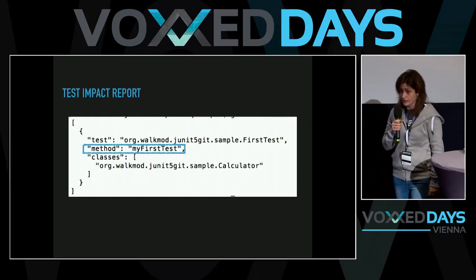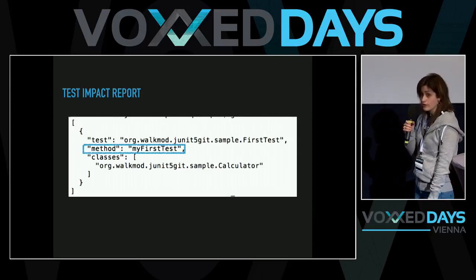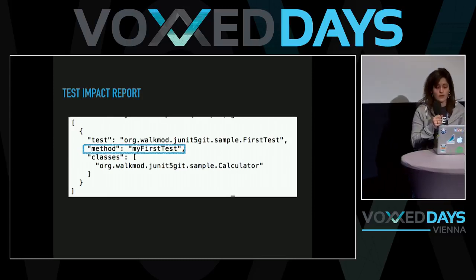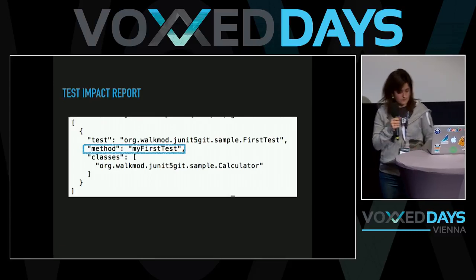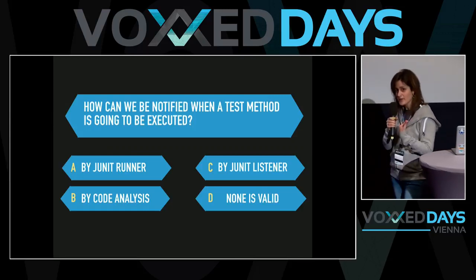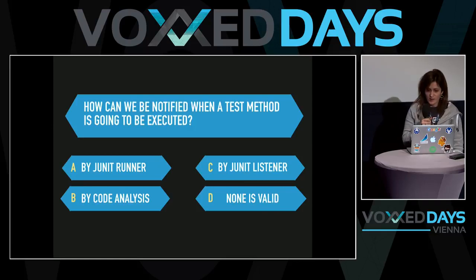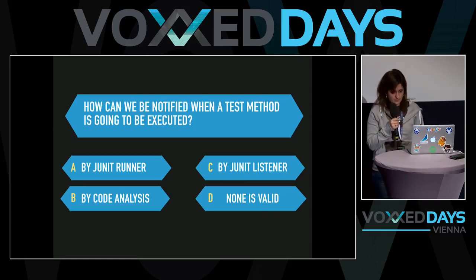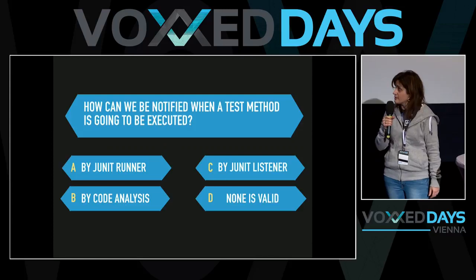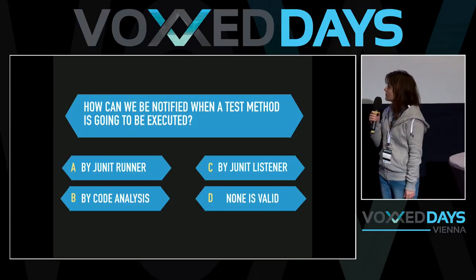The test impact report needs the test class, the test method, and the classes related to those tests. Let's focus on resolving which are the test methods. How can we detect which test methods are going to be executed? Option A: by a JUnit runner. Option B: by code analysis. Option C: by a JUnit listener. Option D: none of them.